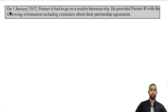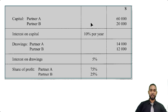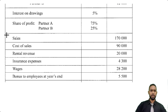We are told that on 1 Jan 2012, partner A had to go on a sudden business trip. He provided partner B with the following information, including reminders about their partnership agreement. So we have a big table — I'm going to break it up into pieces. The top half shows the capital for partner A and partner B: $60,000 and $20,000 respectively. The interest on capital is 10% per year. The drawings for partner A and partner B are $14,000 and $12,000 respectively. Then we have interest on drawings of 5%, and the share of profit between partner A and partner B is 75% and 25%. You'll notice there's no salaries to the partners, but we'll see — there's the next half of this table.